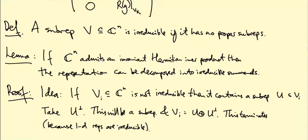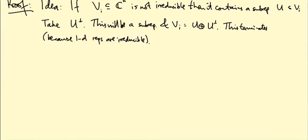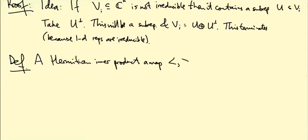To prove the lemma I need to tell you what a Hermitian inner product is, what it means for it to be invariant, and why the orthogonal complement of a sub-representation is a sub-representation. Definition: A Hermitian inner product is a map, which I'll write as angle brackets, from C^n times C^n to C.